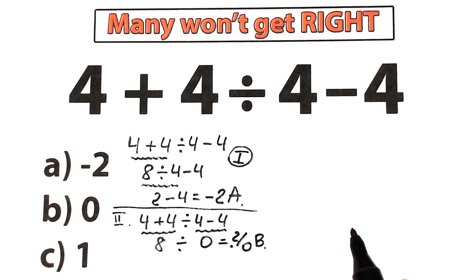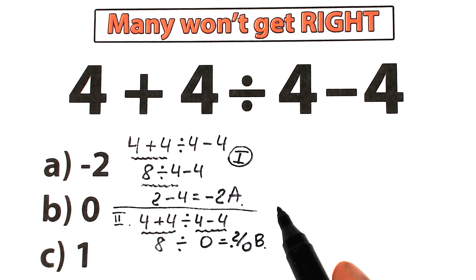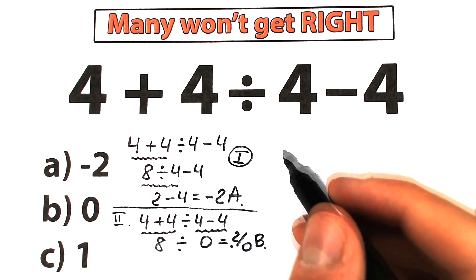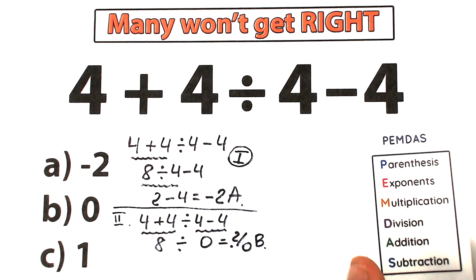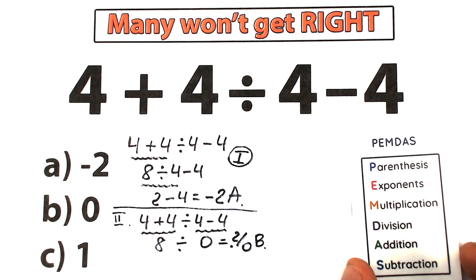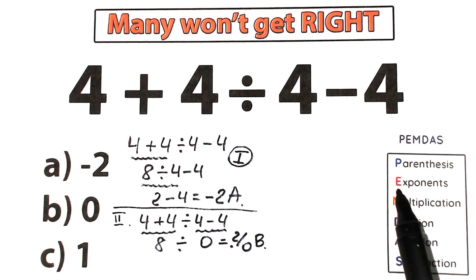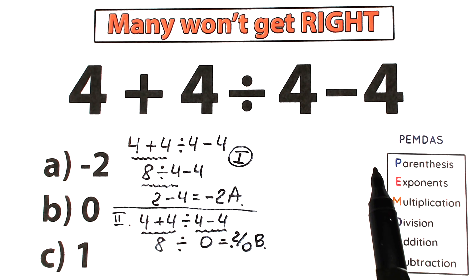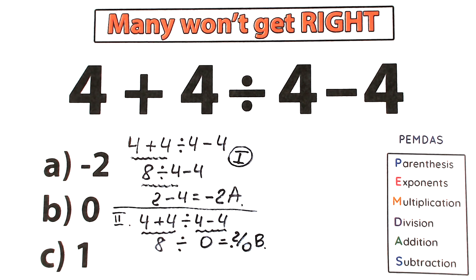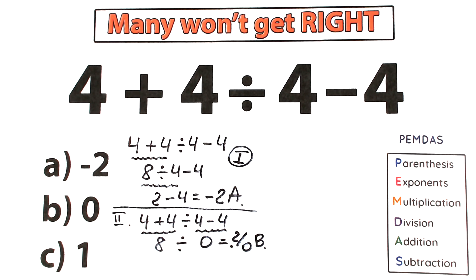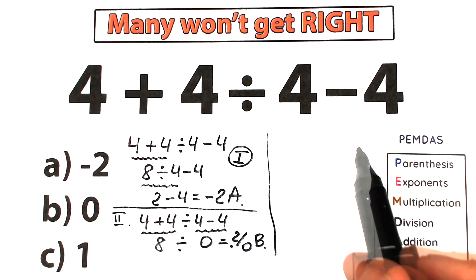In math we can't solve challenges randomly — we must follow the correct order of operations. Let's look at the PEMDAS order of operations, the most popular in the world. All internet libraries, scientific and graphing calculators work according to PEMDAS. It works from top to bottom in strict order: first parentheses, then exponents, then multiplication and division as a group, and finally addition and subtraction as a group.